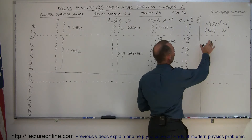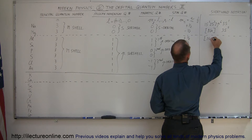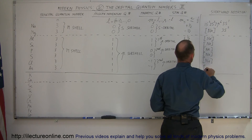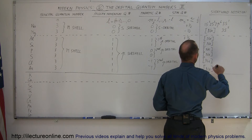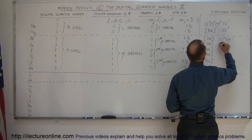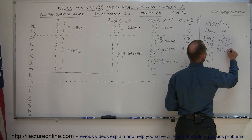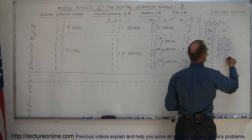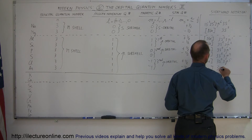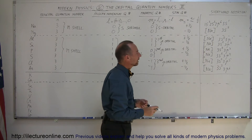In shorthand notation, the 1s², 2s², 2p⁶ portion is represented as [Ne], and then we add: 3s²3p¹ for aluminum, 3s²3p² for silicon, 3s²3p³ for phosphorus, 3s²3p⁴ for sulfur, 3s²3p⁵ for chlorine, and 3s²3p⁶ for argon, filling the P-orbitals one by one.